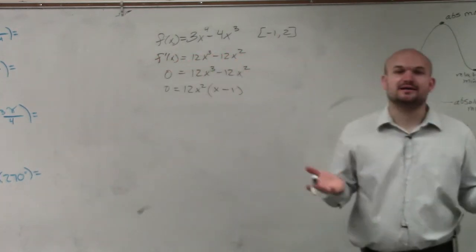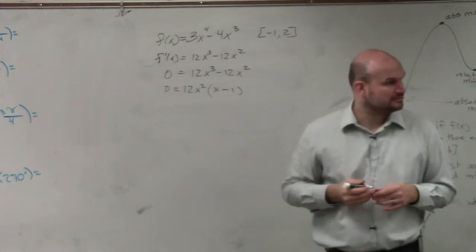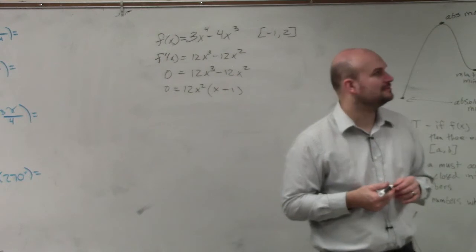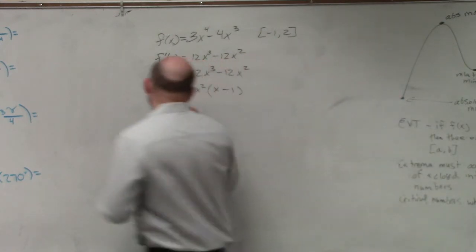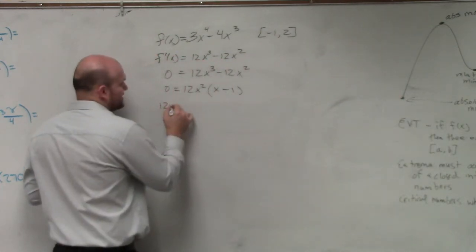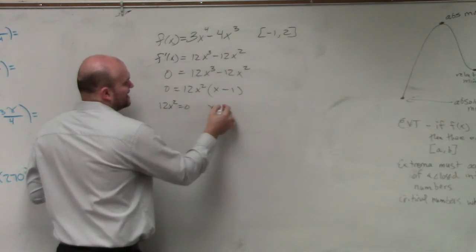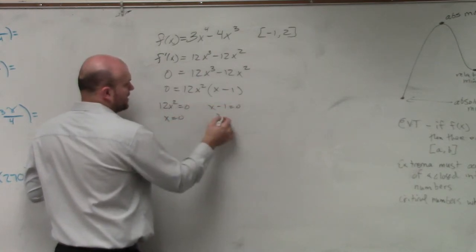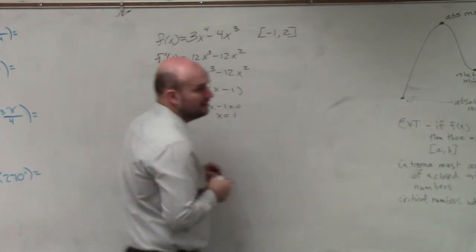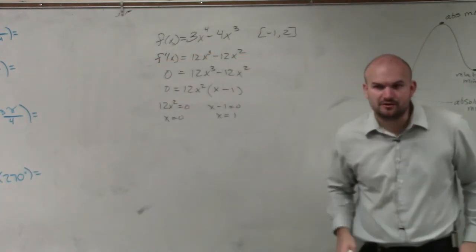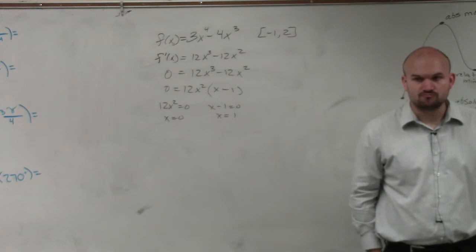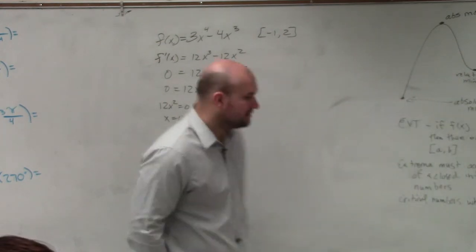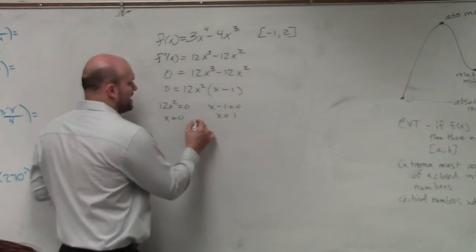By factoring out a 12x², I'm left with x minus 1. Then I'm going to apply the zero product property. Applying the zero product property, I get 12x² equals 0 and x minus 1 equals 0. Therefore, I can solve. I get x equals 0 and x equals 1. So everybody follow me with finding my critical numbers? So these are my critical numbers.